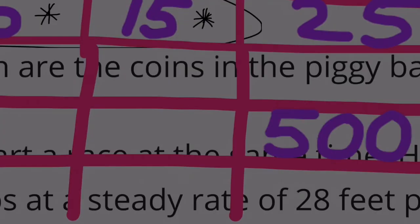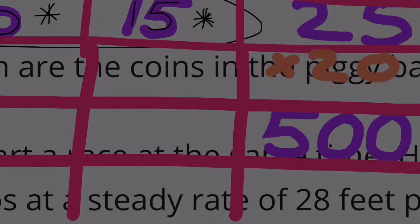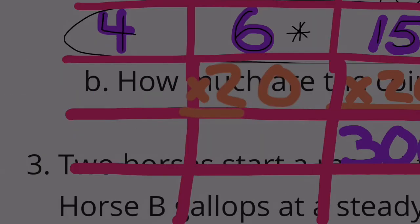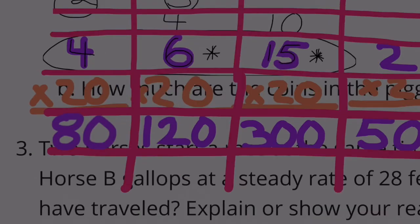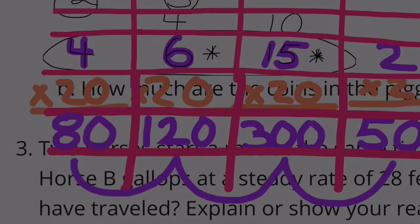Now since we know that there are 500 coins total, we just have to figure out what number times 25 equals 500. That's going to be times 20. 25 times 20 gives us 500. 15 times 20 gives us 300. 6 times 20 gives us 120. 4 times 20 gives us 80. So if we add 80 plus 120, that's 200. 200 plus 300 equals 500.